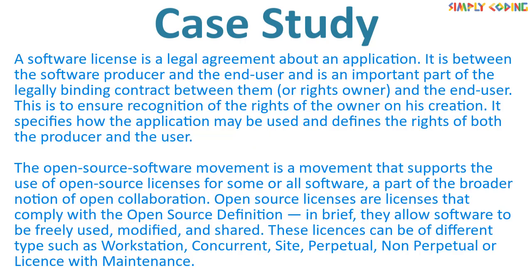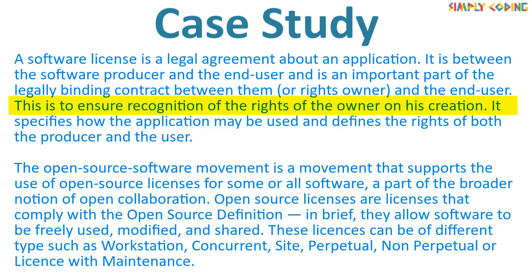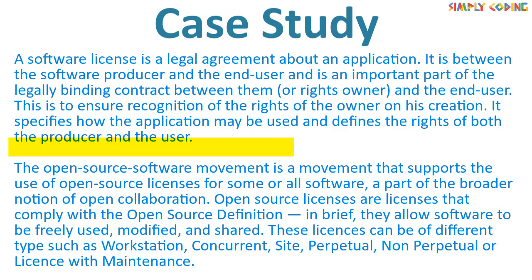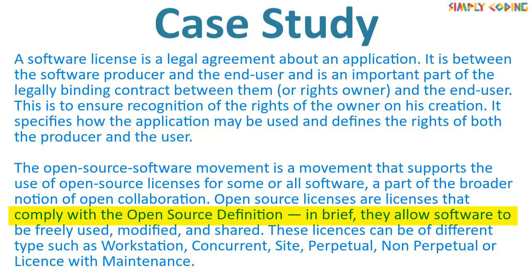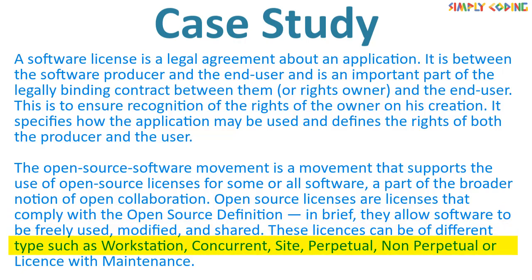Let's do a case study with questions now. A software license is a legal agreement about an application. It is between the software producer and the end user, and is an important part of the legally binding contract between them or the rights owner and the end user. This is to ensure recognition of rights of the owner on his creation. It specifies how the application may be used and defines the rights of both the producer and the user. The open source software movement supports the use of open source licenses for some or all software, as part of the broader notion of open collaboration. Open source licenses comply with the open source definition — in brief, they allow software to be freely used, modified, and shared. These licenses can be of different types such as workstation, concurrent, site, perpetual, non-perpetual, or license with maintenance.